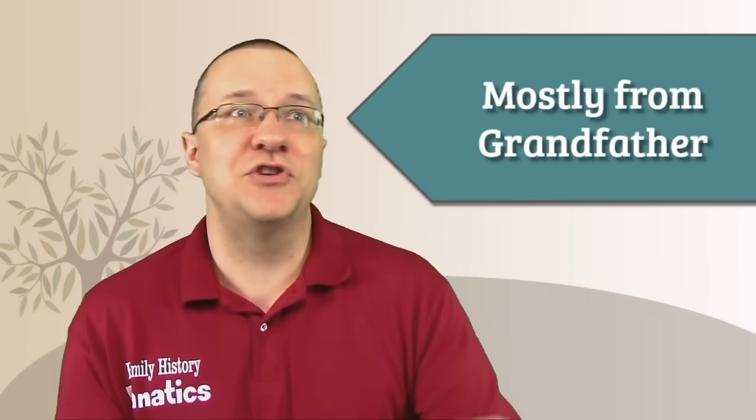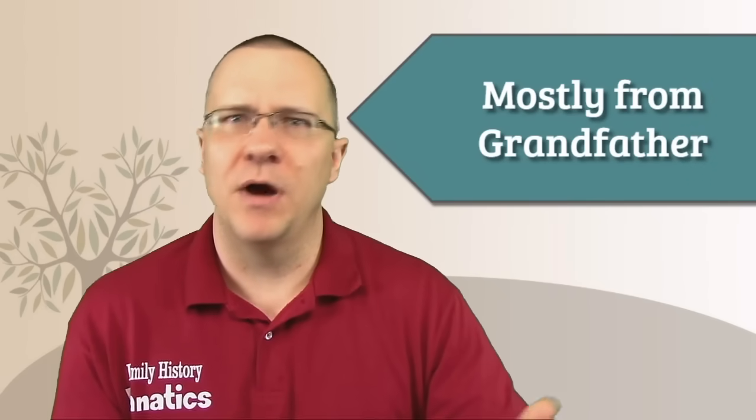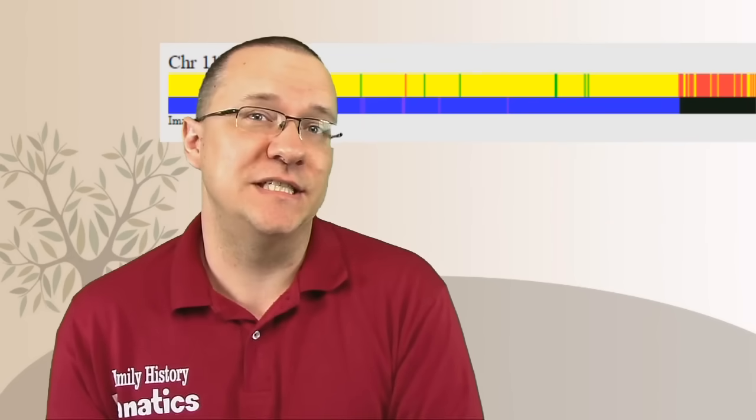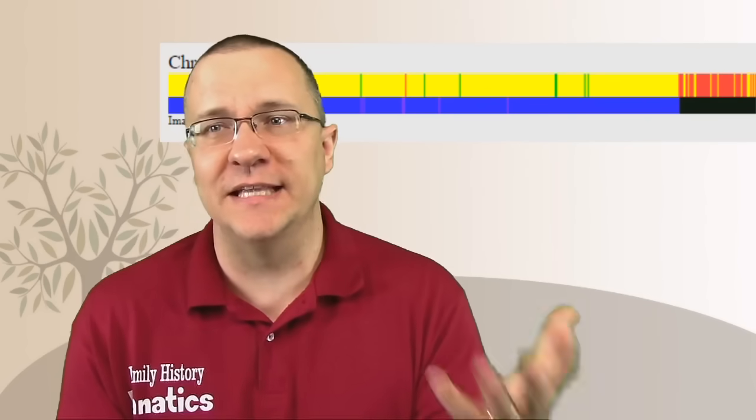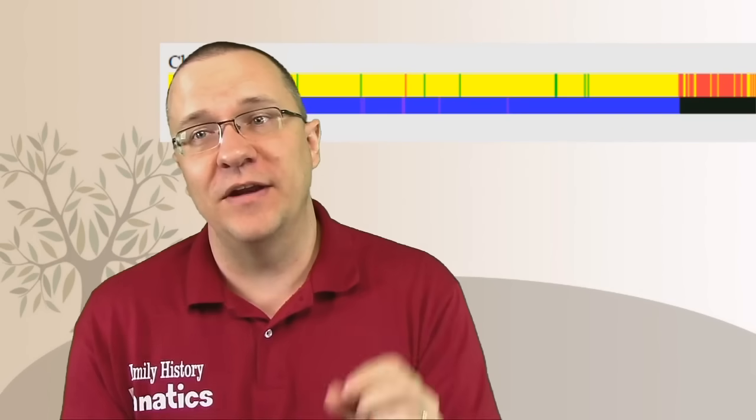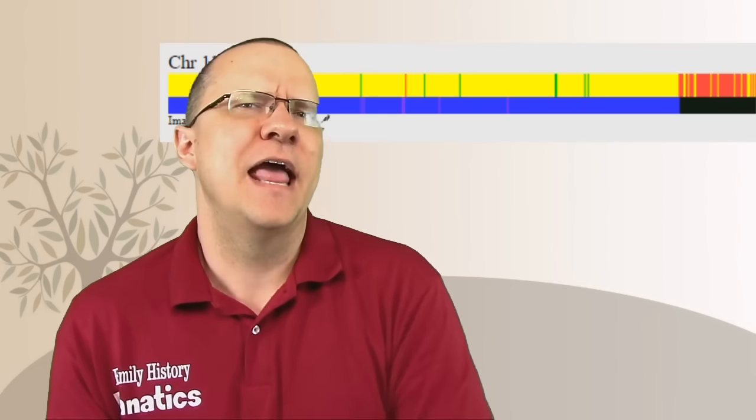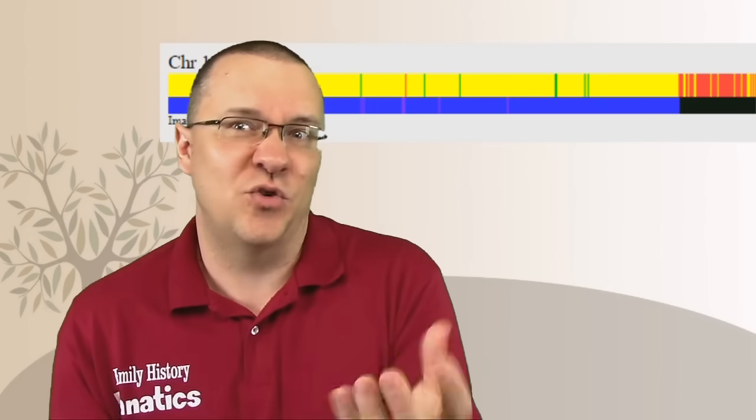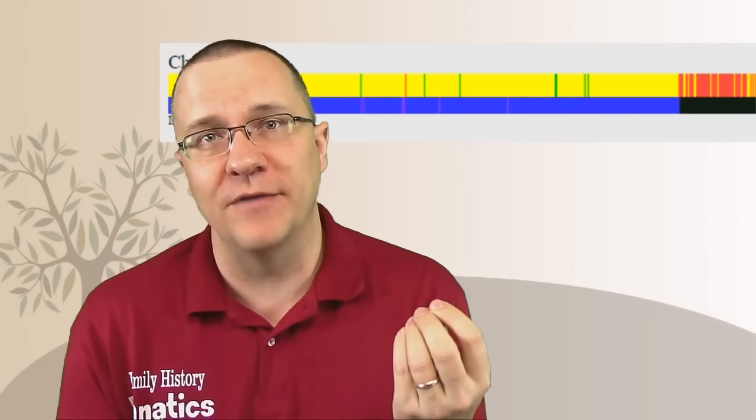We also can receive a chromosome that is mostly from our grandfather. What might this look like? Well, here is my chromosome number 11. And you can see that the majority of it is blue, indicating a half match. That matches me and my grandfather. But then there is on the end a little tail portion that is black, indicating that it is not a match to my grandfather. So it is a match to my grandmother. And so this chromosome, chromosome number 11, is mostly from my grandfather, but some of it is from my grandmother.